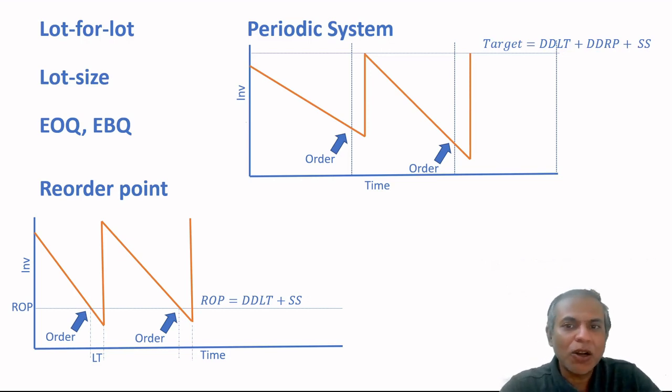Real life systems are a combination of reorder and periodic systems, but we can design these systems so long as we know these concepts described here. In the videos that follow we will talk about specific issues about inventory, how to reduce inventory, how to optimize inventory, and keep continuing your lessons. Stay with me.